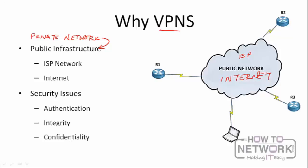In a VPN we use public infrastructure to transport our private information. Although the public infrastructure is available to the public domain, you can create your own private network across it. For instance, if router 1 and router 2 are both connected to the internet, we can create a private network between them to transport information.